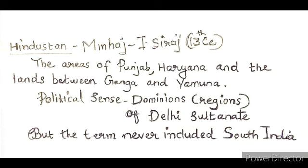With the term Hindustan, he meant the areas of Punjab, Haryana and the lands between the Ganga and Yamuna. He used the term Hindustan in a political sense for lands that were a part of the dominions of the Delhi Sultanate. All territories later conquered by the Delhi Sultanate would be included in this Hindustan, but the term never included South India.